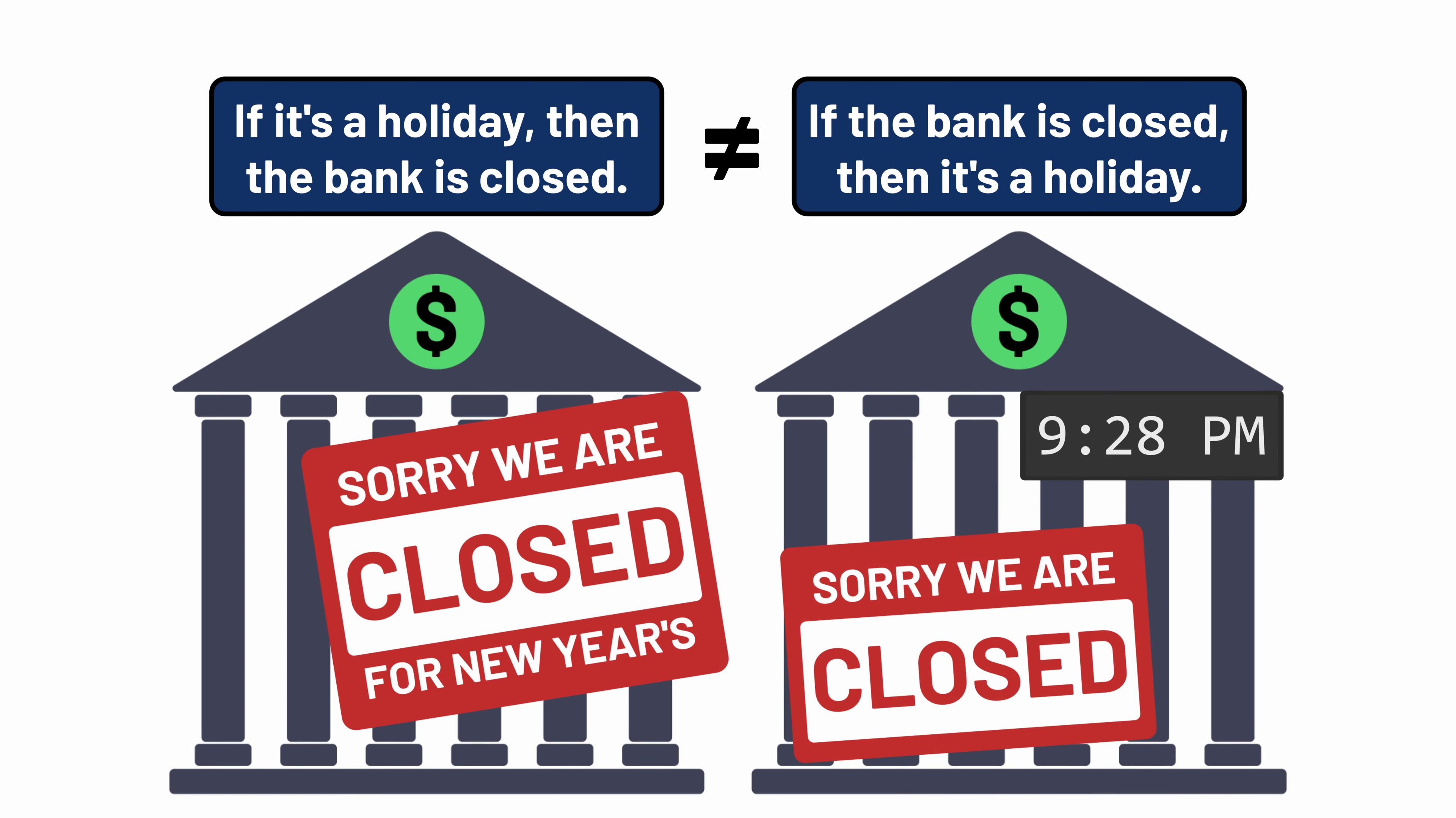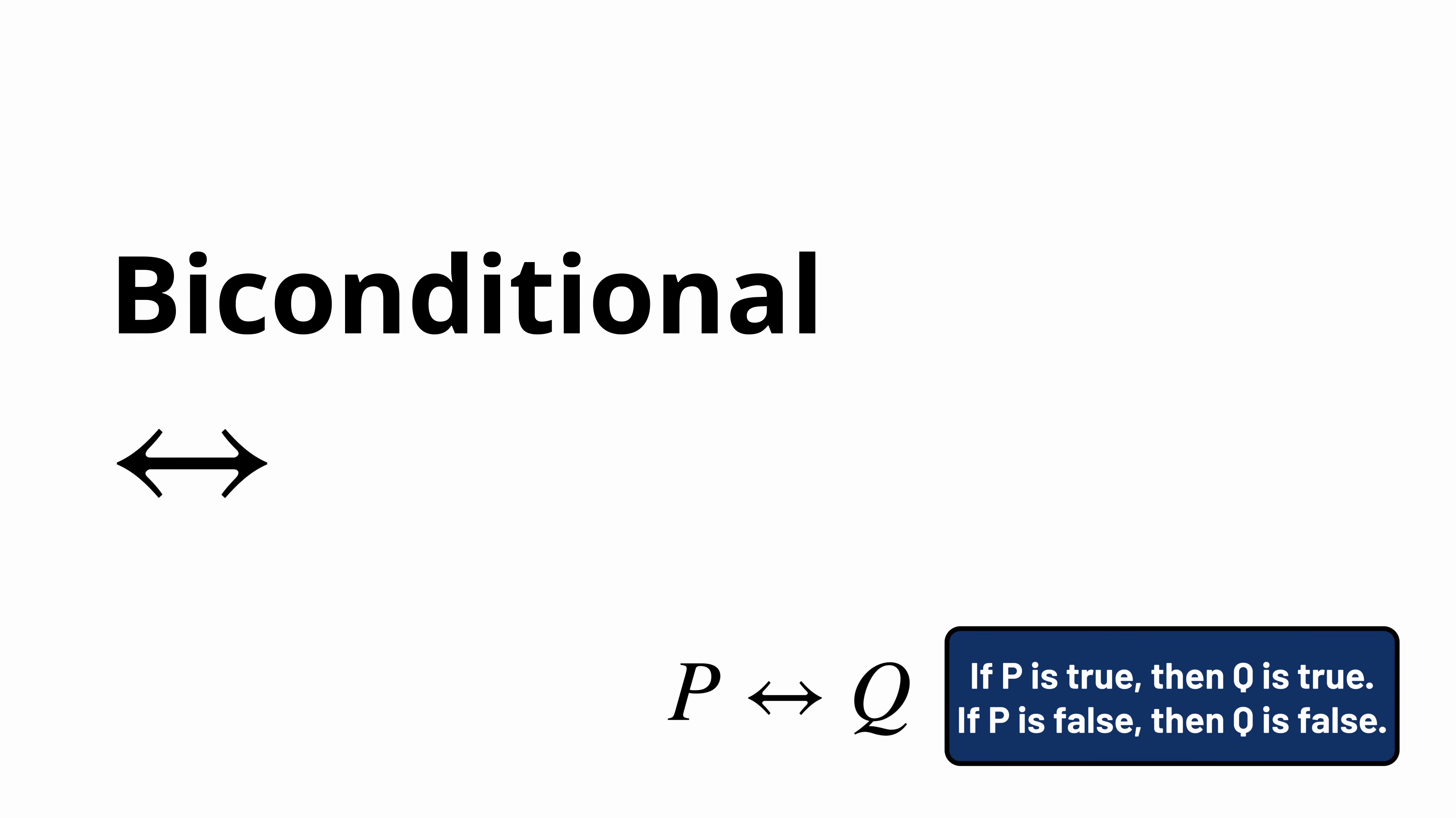If we want to express the idea that both P implies Q and Q implies P, we can use this double arrow symbol, the biconditional, which we often read as if and only if. P if and only if Q means that if P is true, then Q is true. And if P is false, Q is false. In other words, P and Q always have the same truth value. Either they're both true, or they're both false.